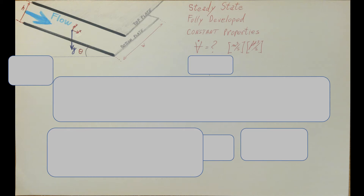Hello everyone! Let's solve a fluid flow problem. They want us to find the volumetric flow rate for a fluid flow between two parallel plates. These two plates are inclined and have an angle theta with respect to the horizon. They tell us that the distance between the plates is h, the width of the plate is w. They also tell us that we're dealing with a steady state, fully developed condition, and we have constant properties.